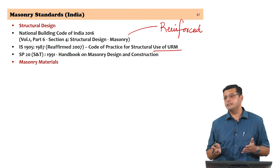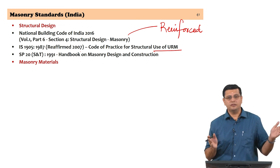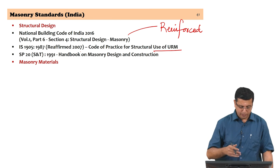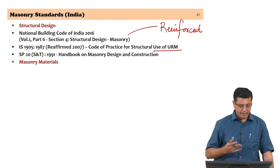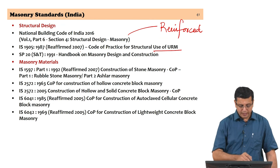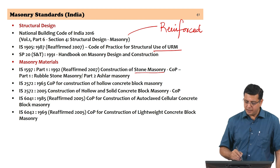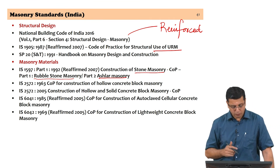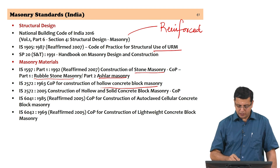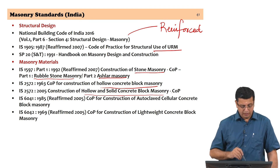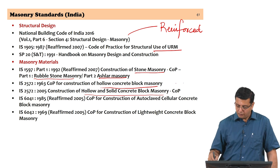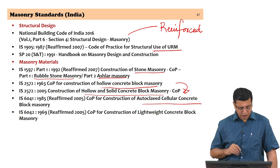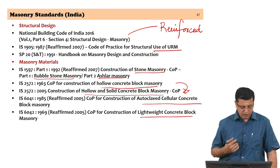As far as masonry materials are concerned, there is an entire spectrum of codes covering different types of units and mortars. These include codes for stone masonry, rubble stone masonry, ashlar masonry, hollow concrete block masonry, hollow and solid concrete block masonry, autoclaved cellular concrete blocks, and lightweight concrete blocks, among many more.